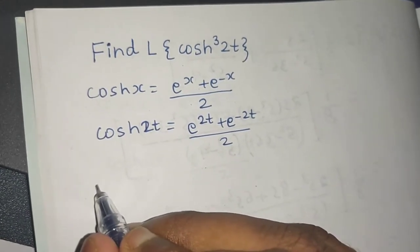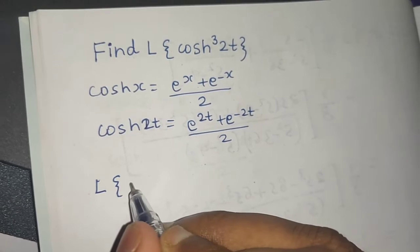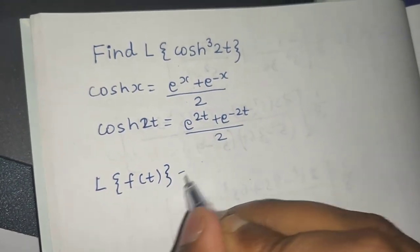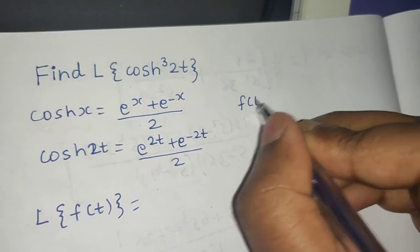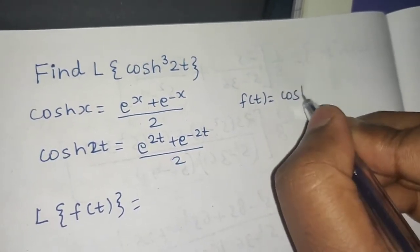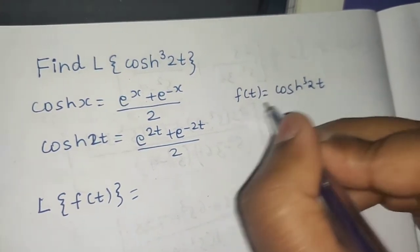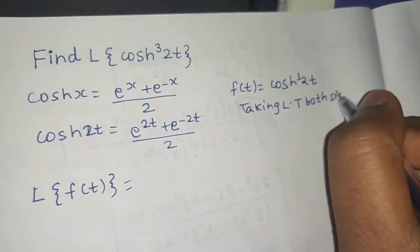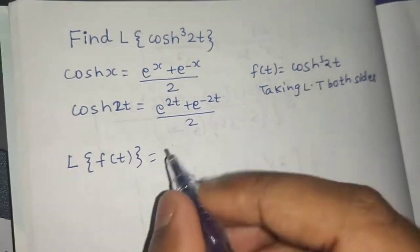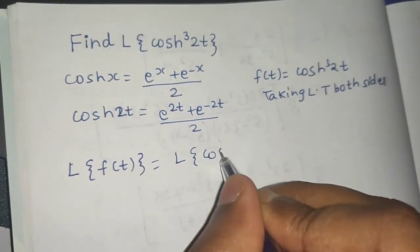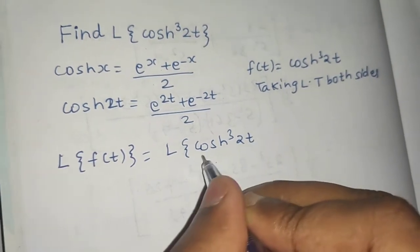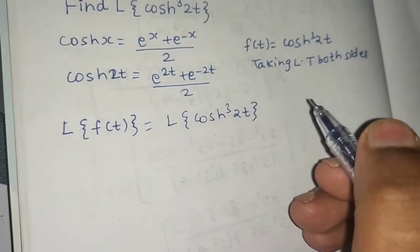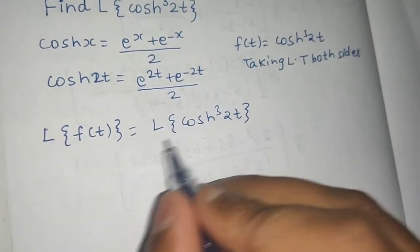Let f(t) be cosh cube 2t. Taking Laplace of both sides, we get the Laplace of f(t) equals the Laplace of cosh cube 2t. Note that this is the hyperbolic cosh function.